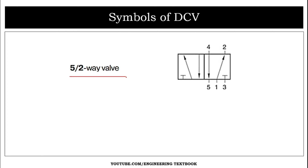The five by two valve has two positions and five ports: one, two, three, four, and five. Port one is the pressure port; ports two and four are work ports; ports three and five are exhaust ports. Oil from port one transfers to port two towards the cylinder, and oil returns from the cylinder through port four to port five — the exhaust port — while port three is closed.